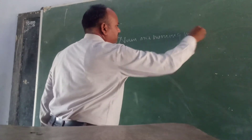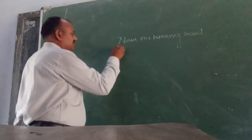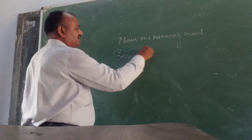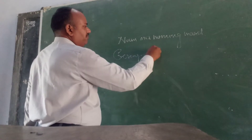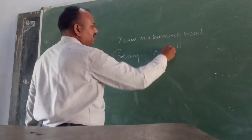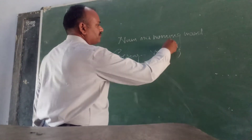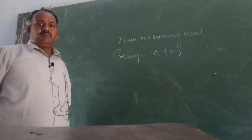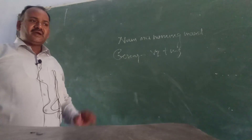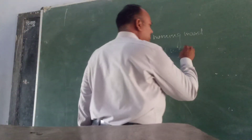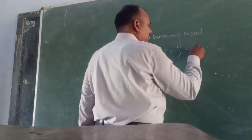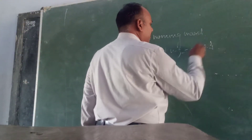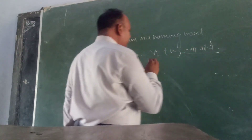Ab gerund kya hai? Gerund duniya ke koi bhi verb ki first form plus -ing hoti hai. Verb ki first form mein -ing ka priyok karenge, Hindi mein arth hoga 'na', 'ni', 'ne'.